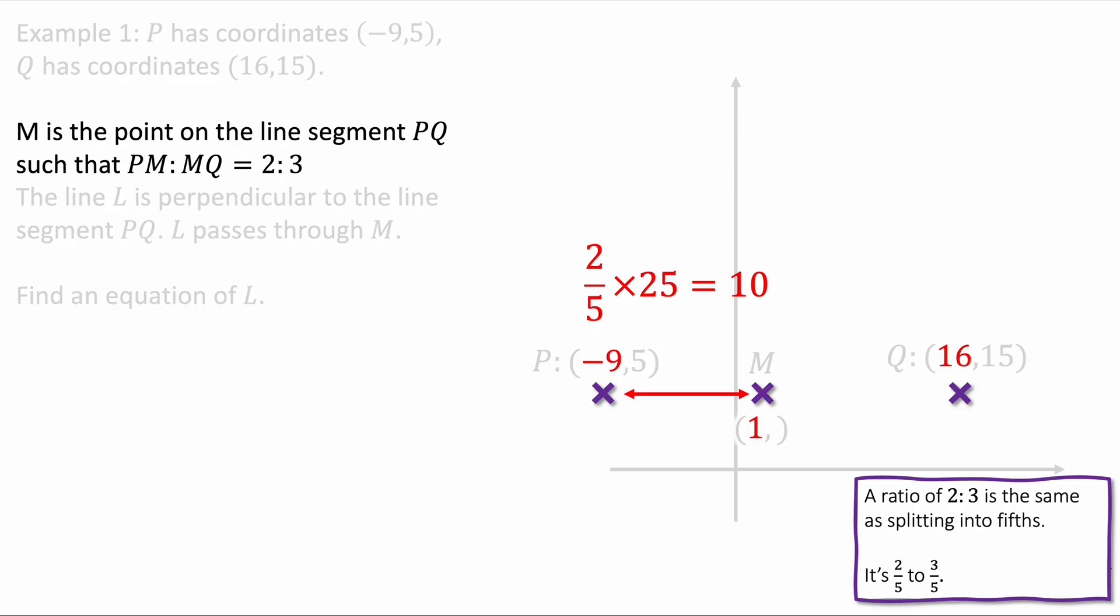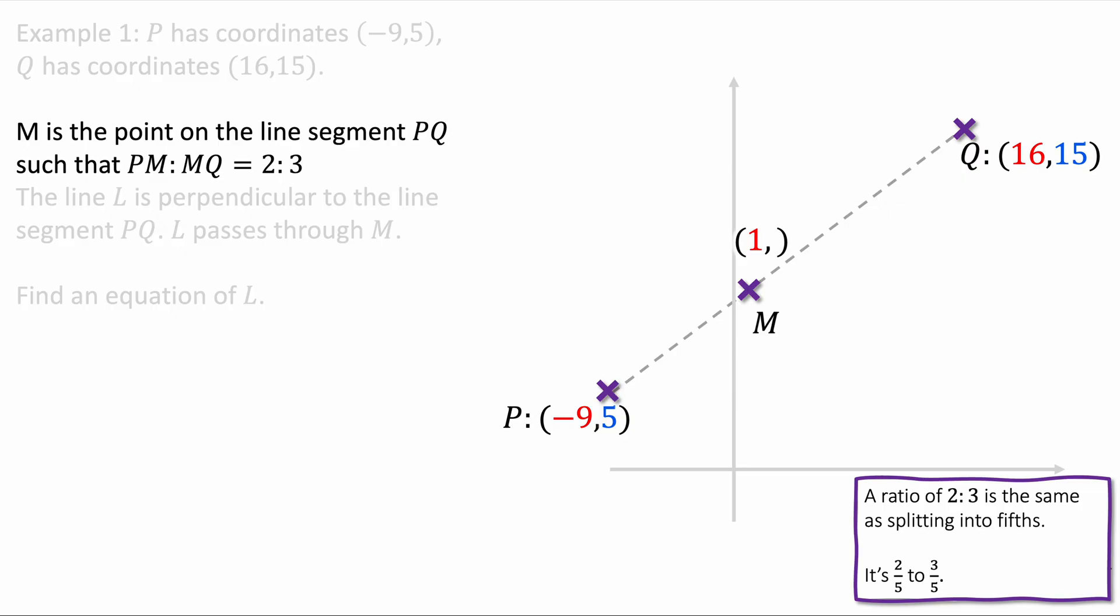We're going to repeat that whole process again for the y-coordinates here. We're going from 5 to 15 and that means we're going up 10 spaces. Two-fifths of 10 is 4. So we're going four spaces up. 5 plus 4 is 9. We're going up to a y-coordinate of 9. We have found the coordinates of M.